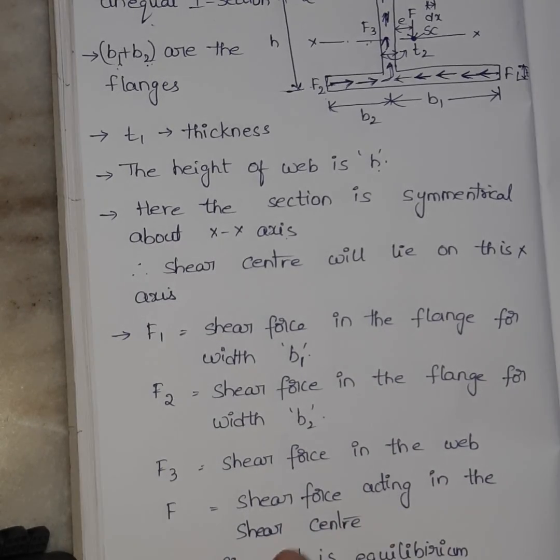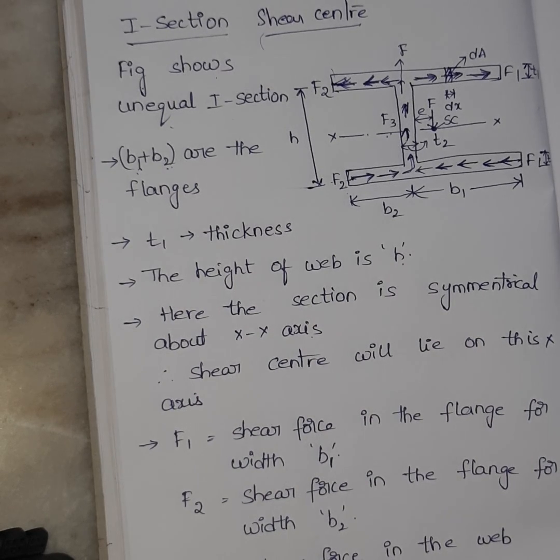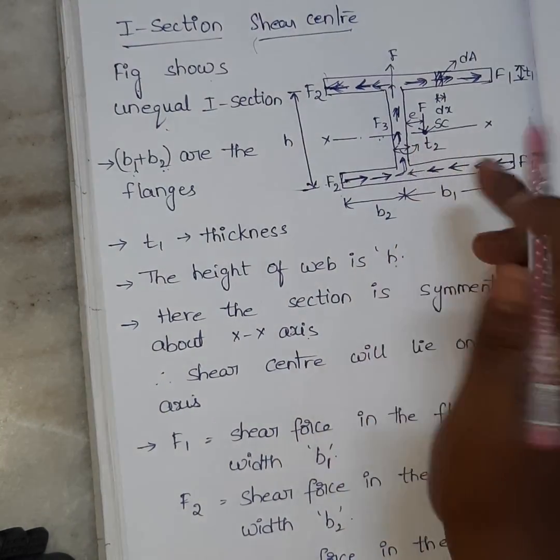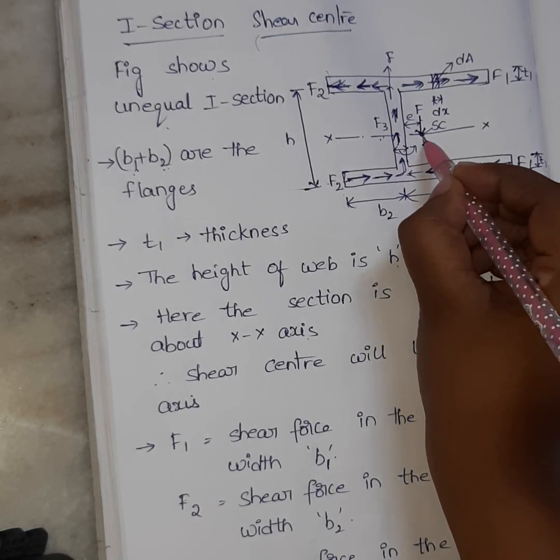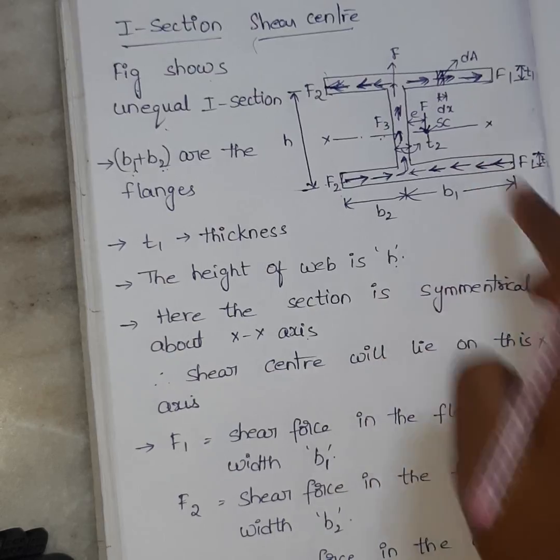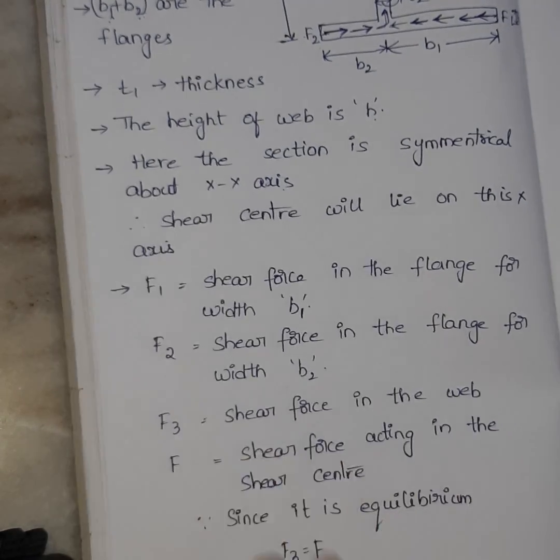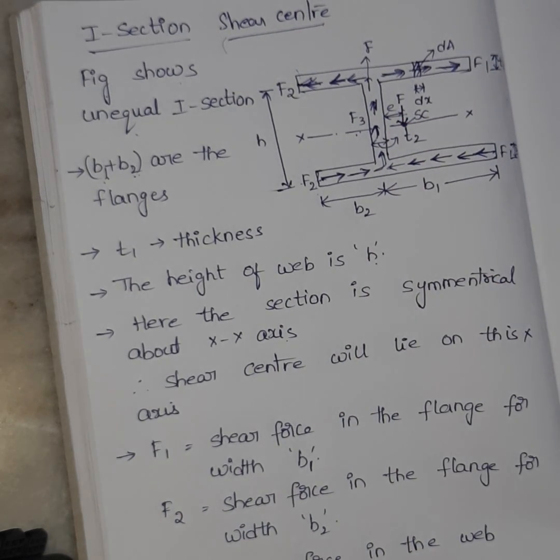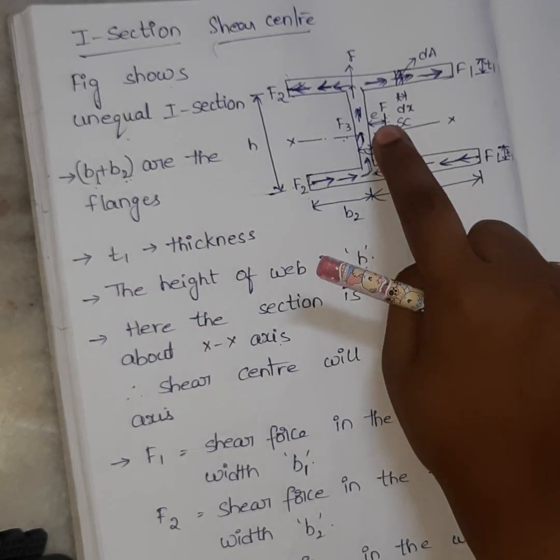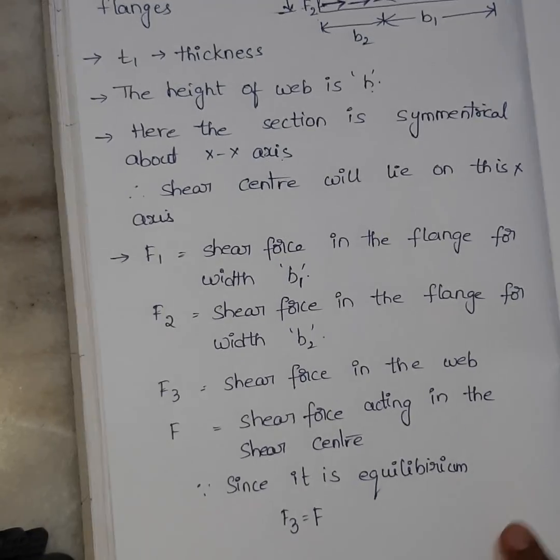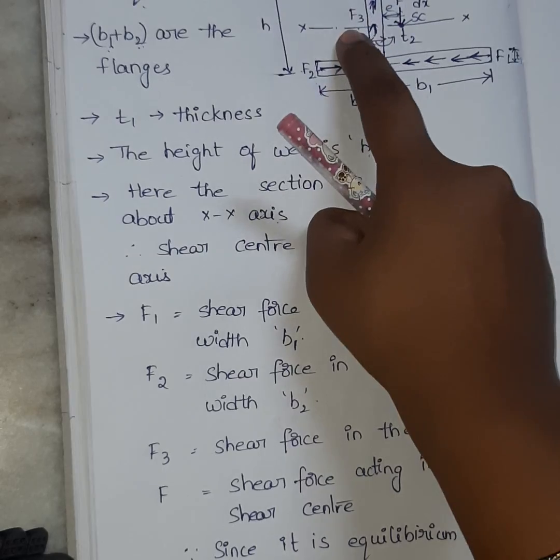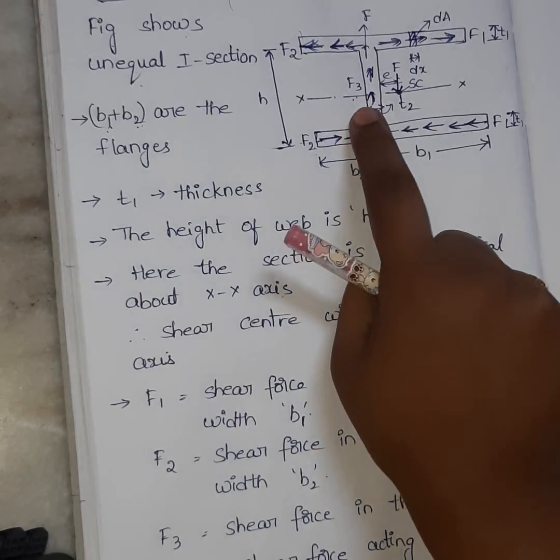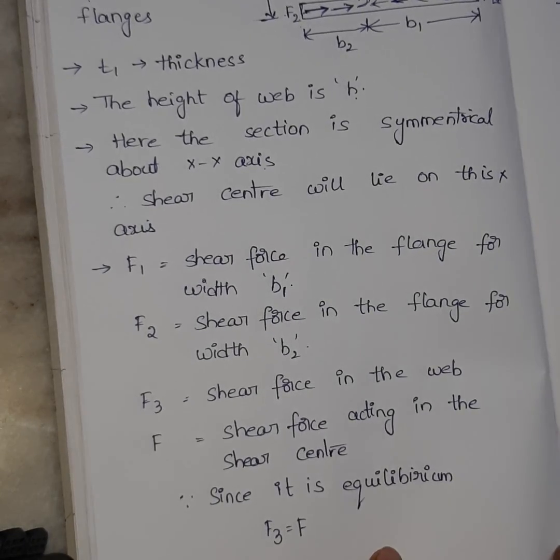F is the shear force acting at the shear center. We can see the shear center here. The section is symmetrical. So this is the x-axis where I will load the load. This is the F on the x-axis. The section is symmetrical, so the shear center is formed with some eccentricity. What distance we can calculate in the problem. So we should calculate. See, F3 is equal to F. Since the section is symmetrical, F3 is equal to F. Since it is in equilibrium, F3 is equal to F.